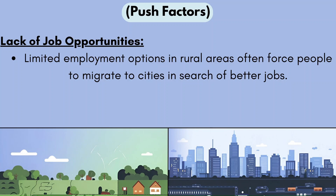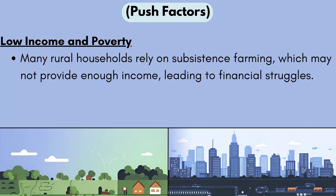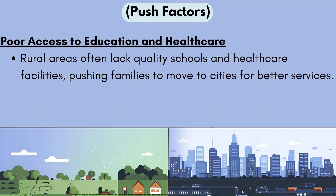Another push factor is low income and poverty found in rural areas. Many rural households rely on subsistence farming, which may not provide enough income, leading to financial struggles. Subsistence farming is farming done primarily to meet the needs of the farmer and his family — there's not enough to sell and make money from. Because of this lack of income, people want to move to an urban area to find a job to take care of themselves and their families.